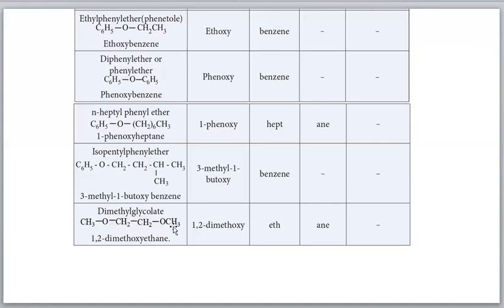For the compound with two methoxy groups: if instead of hydrogen atoms two methyl groups are present on glycol, the common name is dimethyl glycol ether or dimethyl glycolate.